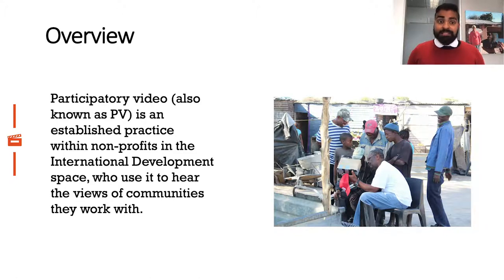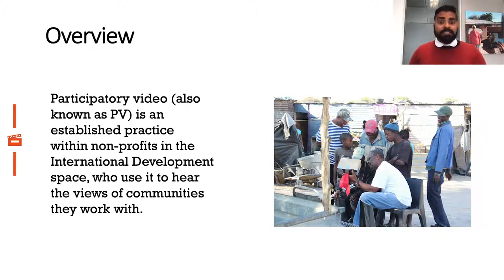Back in 1967, Lowe and Snowden pioneered the Fogo process, in which they put filmmaking equipment directly in the hands of children. These children then captured the challenges of living on Fogo Island in the province of Newfoundland, Canada. Since then, a number of organizations, and NGOs in particular, have been seeing the potential of using PV to enable communities they work with to tell their stories. This enables NGOs to hear directly from the participants that they work with.